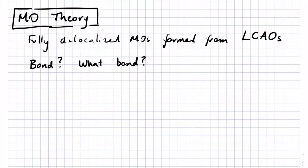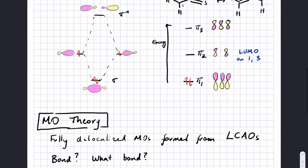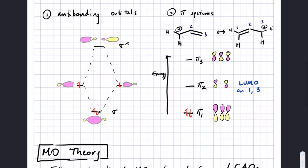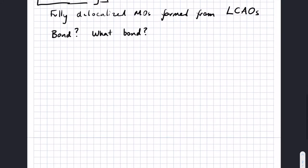We're going to develop a qualitative way of dealing with MO theory, in the same way that we have done for anti-bonding orbitals and pi systems. Your book introduces something called qualitative molecular orbital theory, for which there are 14 rules. In my chapter one notes I wrote them out. I'd rather discuss the rules while we actually draw and talk through making some of these orbitals.